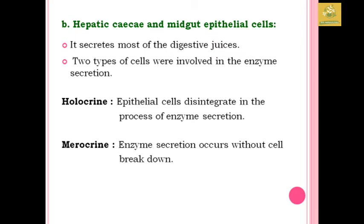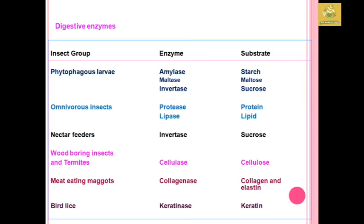The gastric caeca and midgut epithelial cells secrete most of the digestive juices. There are two types of cells involved in enzyme secretion: holocrine and merocrine. In holocrine secretion, the epithelial cells disintegrate during enzyme secretion. In merocrine secretion, the enzyme secretion occurs without cell breakdown. These are the two types you must remember. Based on the insect group, different enzymes are produced, mainly depending on the substrate they utilize for living.